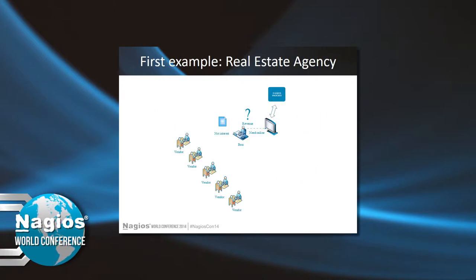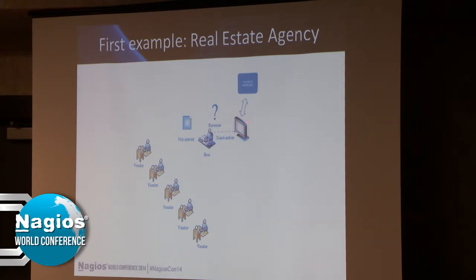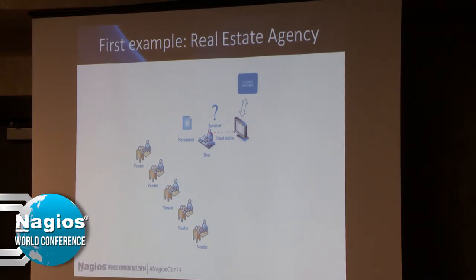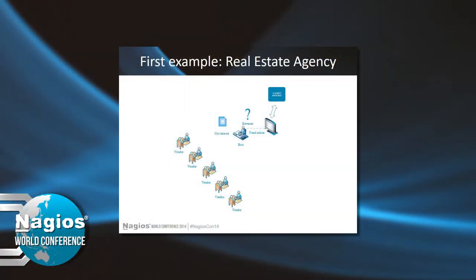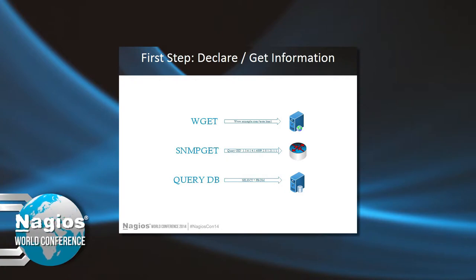The first example is real estate agents. Real estate agents don't like using paper reports, and they want to see the sales on a big screen. Their system writes data continuously to a file. In this case, I read only the file rather than getting information from a URL, SNMP gets, or other ways. Other ways to get information include SNMP gets, wget, query DB, NSClient++, NRPE, or other methods.